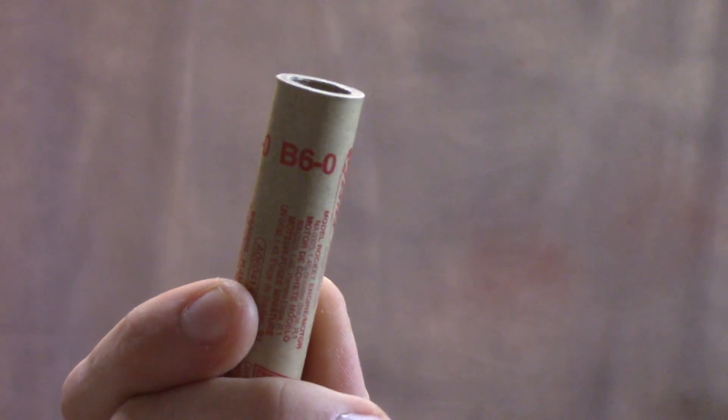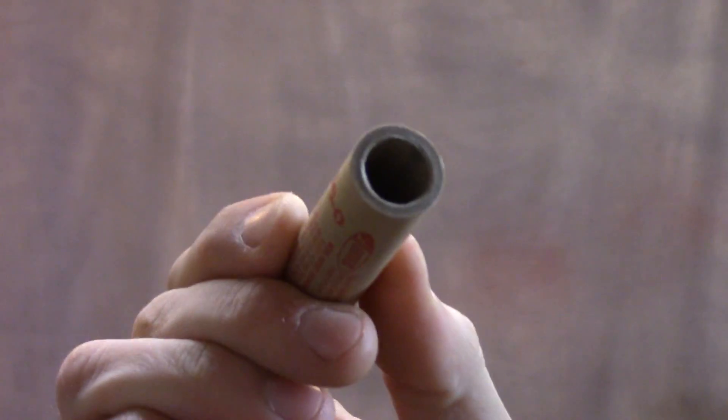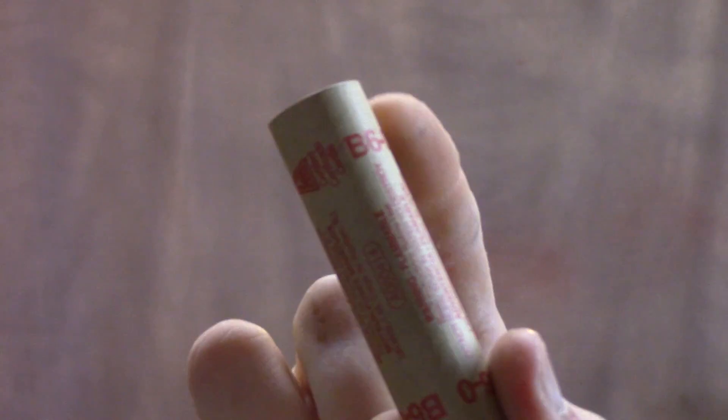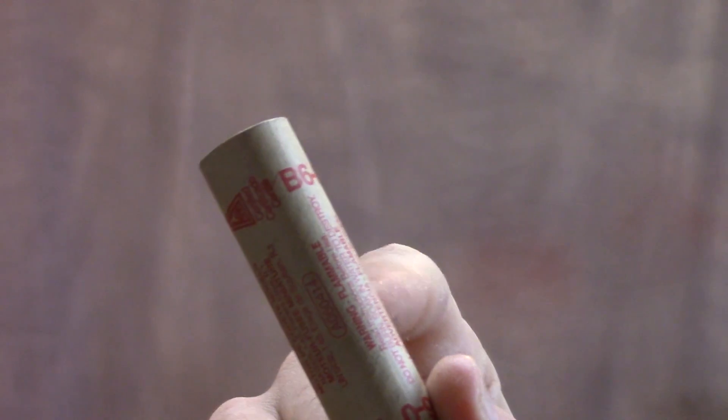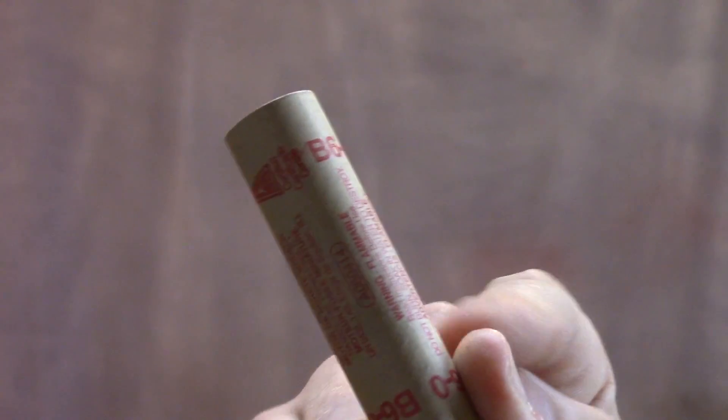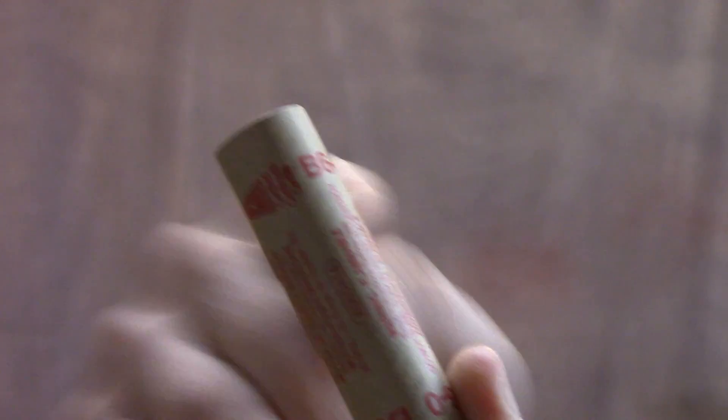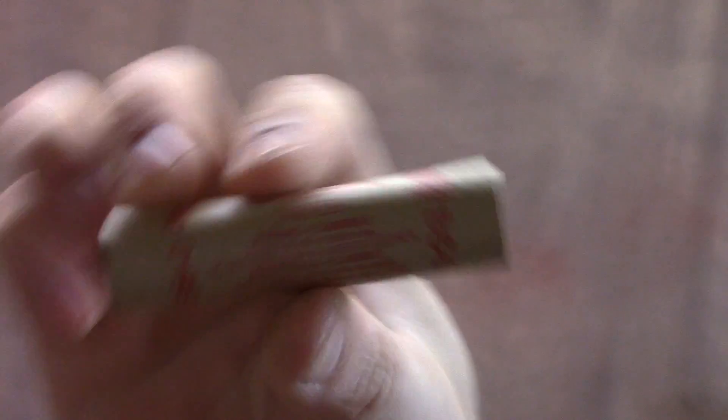Here's a B6-0. Look at that. You can't even see it down in there. There's hardly anything inside this. It only has about that much because it just has thrust and then an ejection charge, but it has no clay cap on top of the ejection charge either, because it's intended to light the next rocket motor for a dual stage rocket.